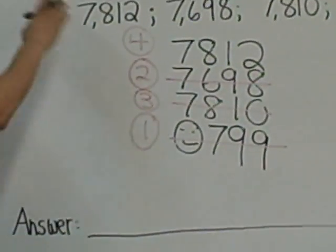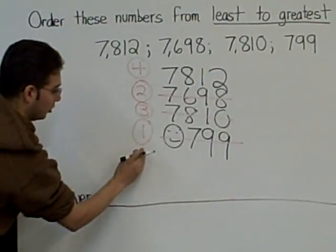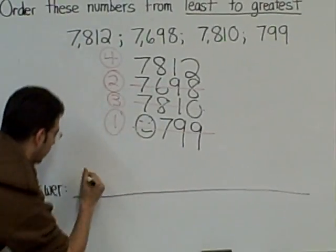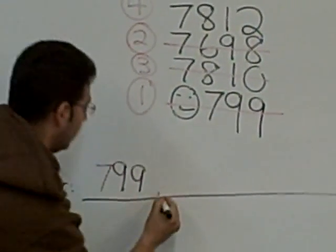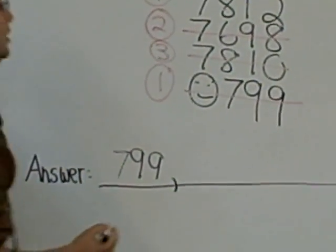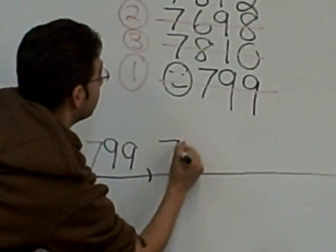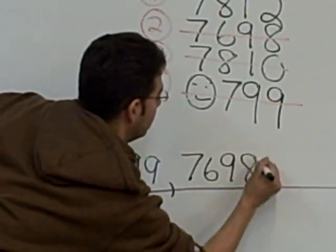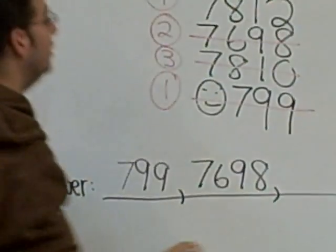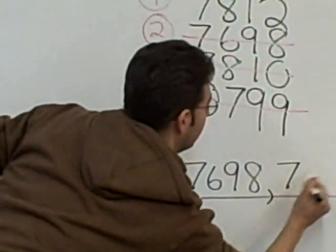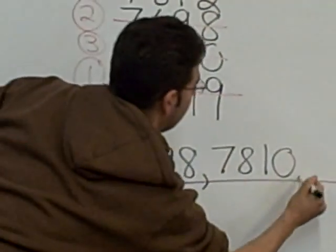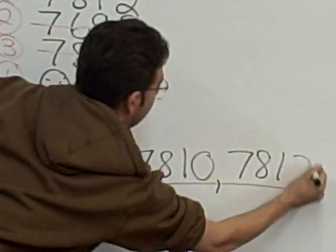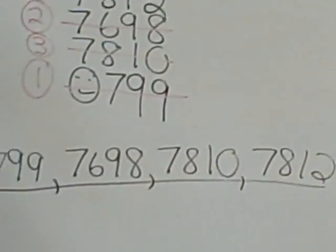It said to write them in order from least to greatest. So we'll rewrite: 799 is the first, 7,698 is the second, 7,810 is the third, and 7,812 is the last.